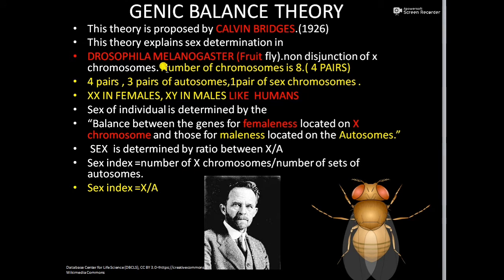When we look at the karyotype of Drosophila melanogaster, it consists of eight chromosomes, meaning four pairs of chromosomes are present. Among these, three pairs are autosomes and one pair is sex chromosomes. The sex chromosomes in females are XX and in males are XY.